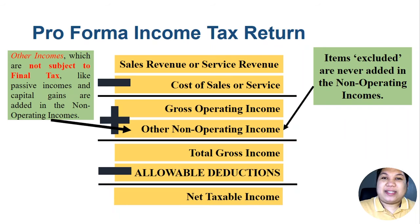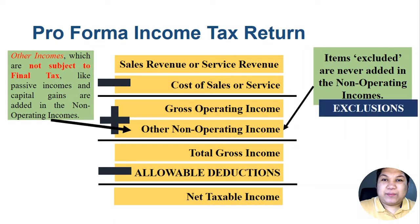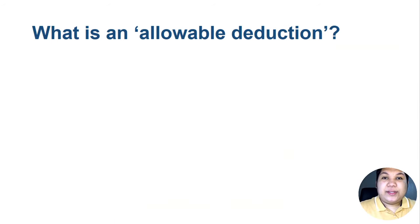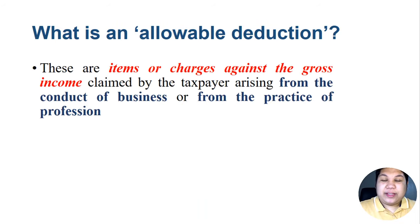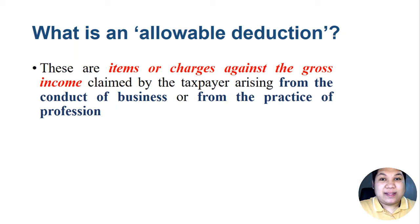After combining all other-than-operating income, we add it to our gross operating income to get total gross income, then deduct allowable deductions to get net taxable income. Allowable deductions are items or charges against gross income claimed by the taxpayer arising from the conduct of business or from the practice of a profession — in accounting, these are simply called expenses.